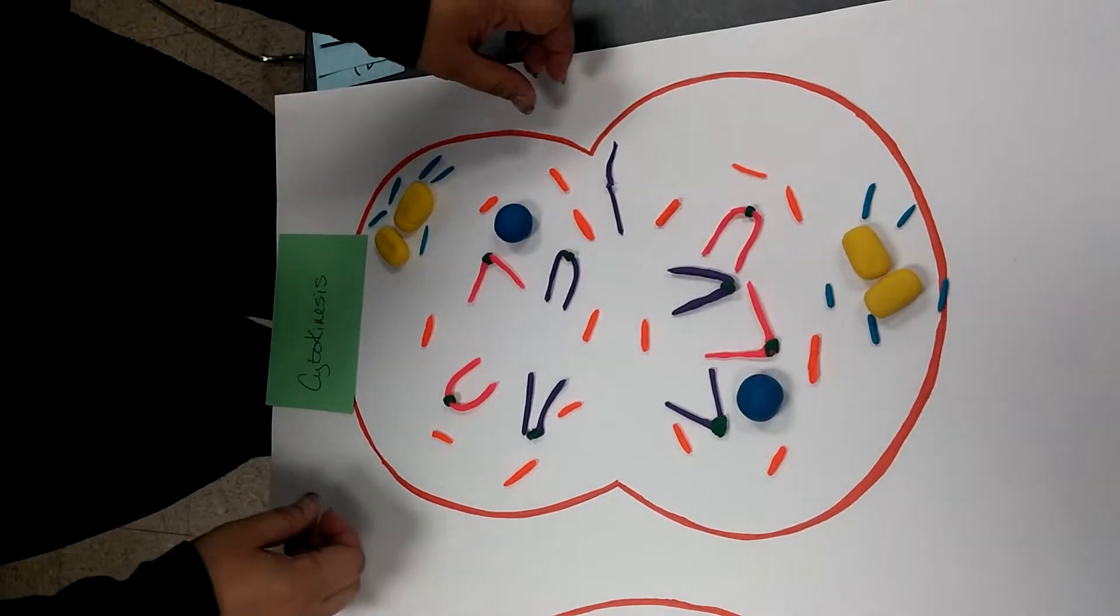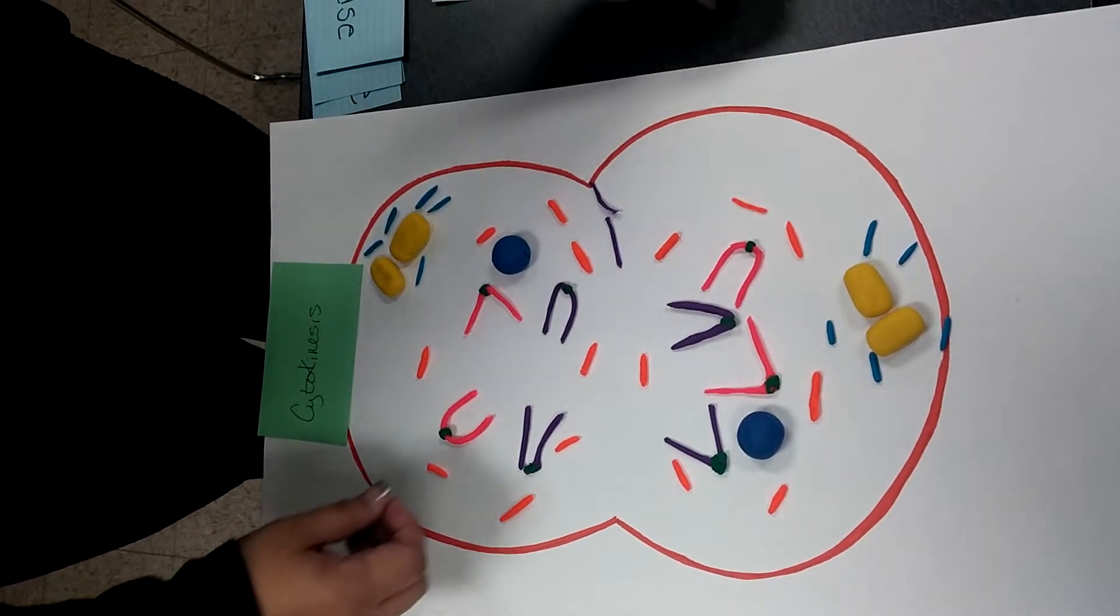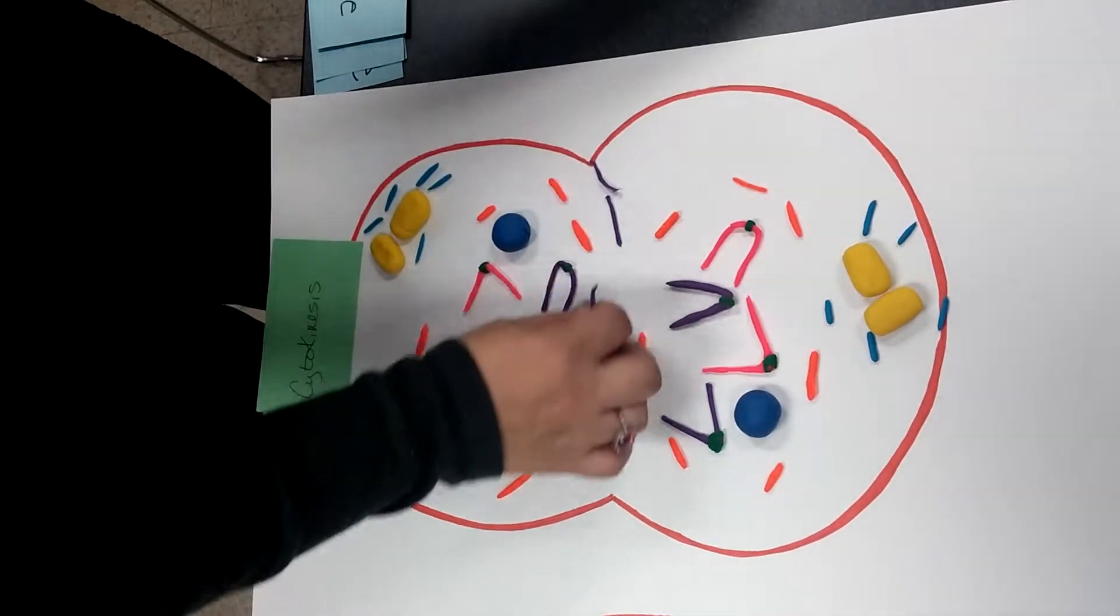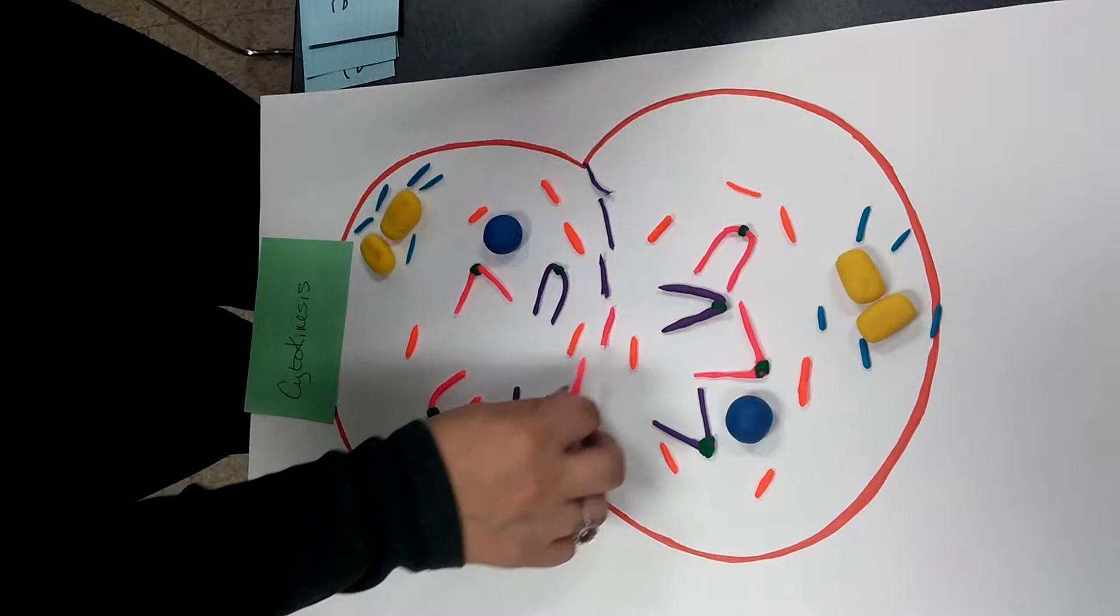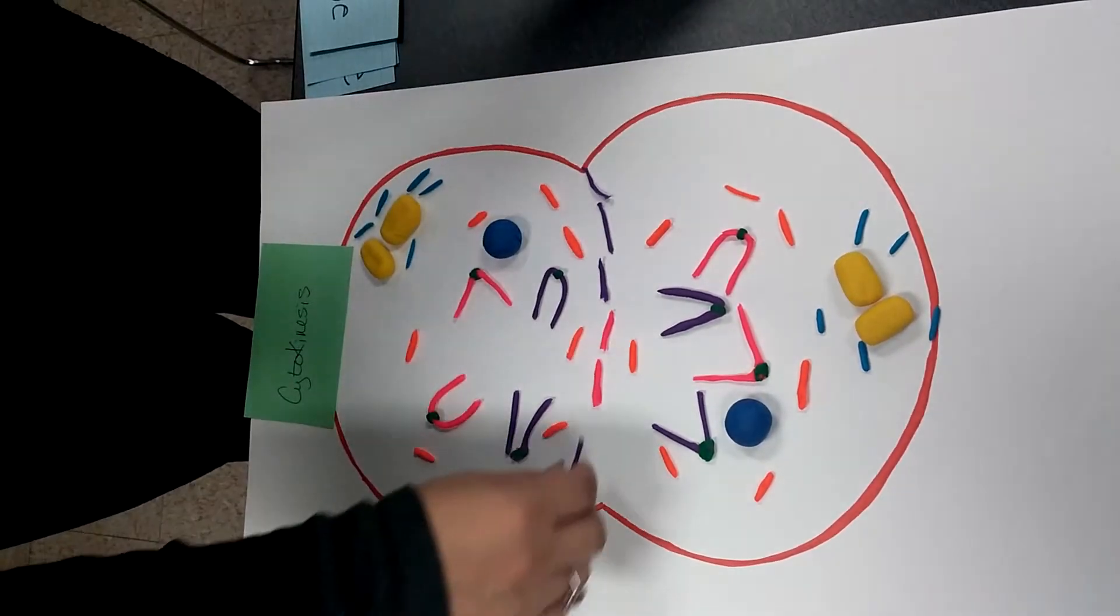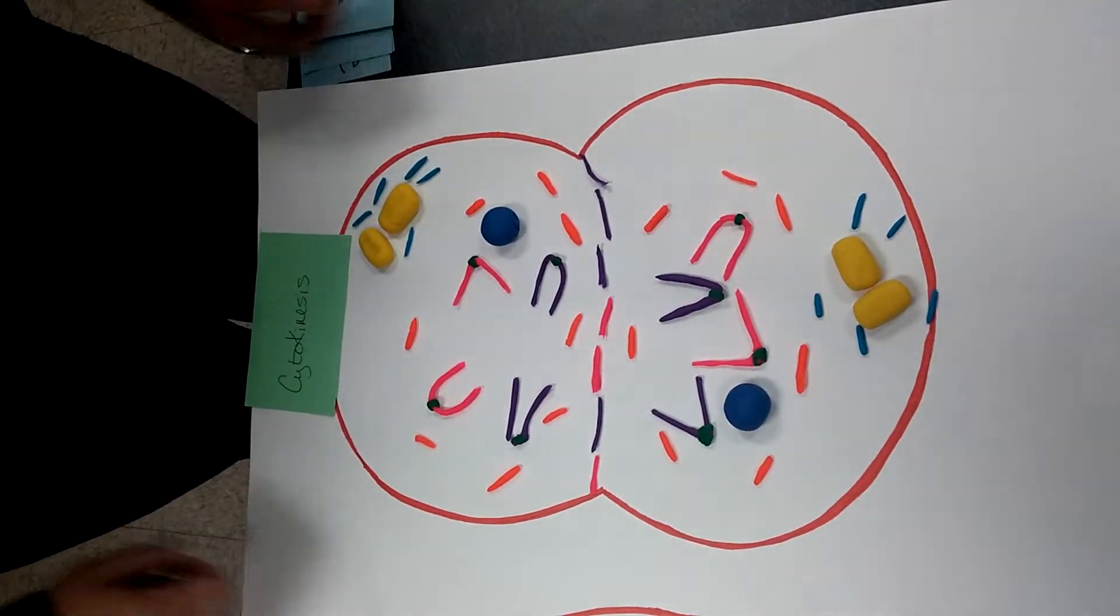At the end of telophase, a ring of actin forms in the middle of the two dividing cells, forming the cleavage furrow for the two cells to split and become individual daughter cells.